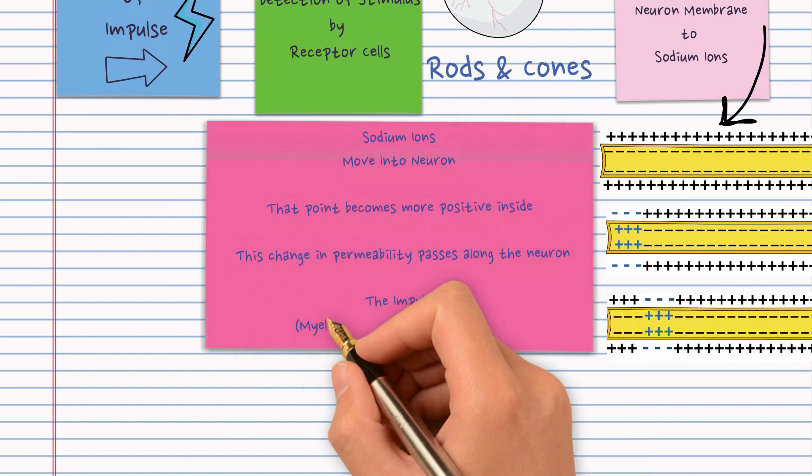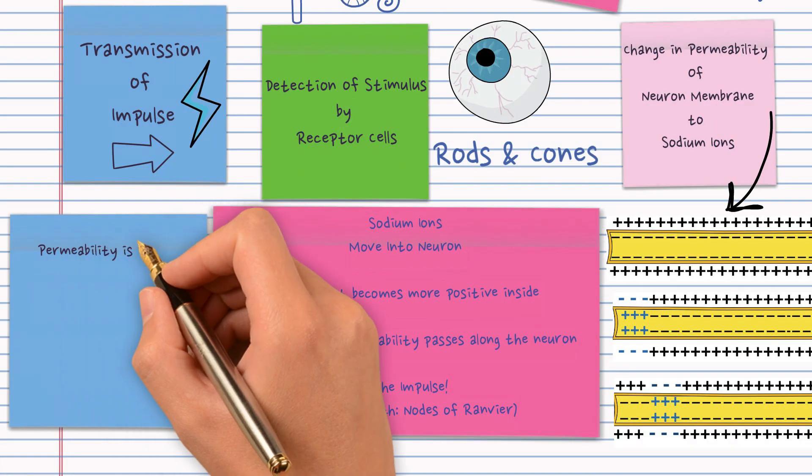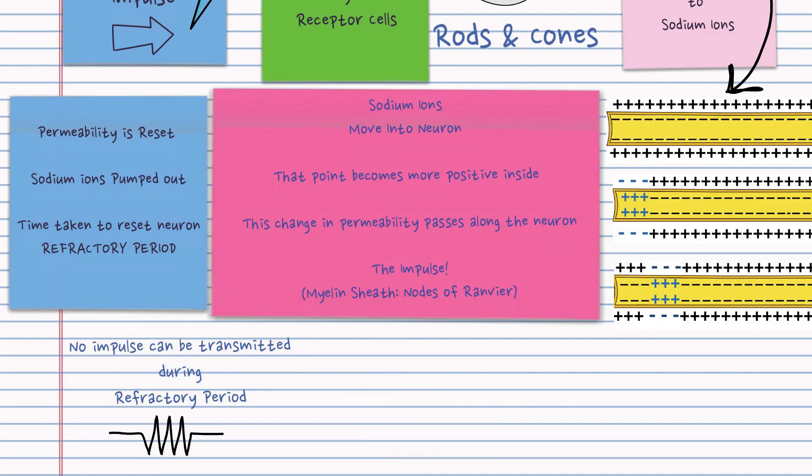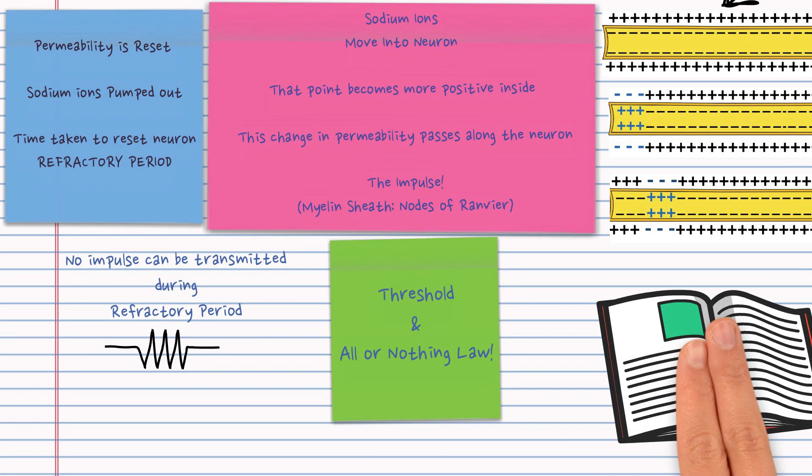This happens the whole way along but if there's a myelin sheath it only needs to happen at the nodes of Ranvier. As the impulse passes the permeability is reset and this is called the refractory period. No impulse can be transmitted during the refractory period. Be sure to revise the threshold and the all or nothing law. They appear in exams frequently.